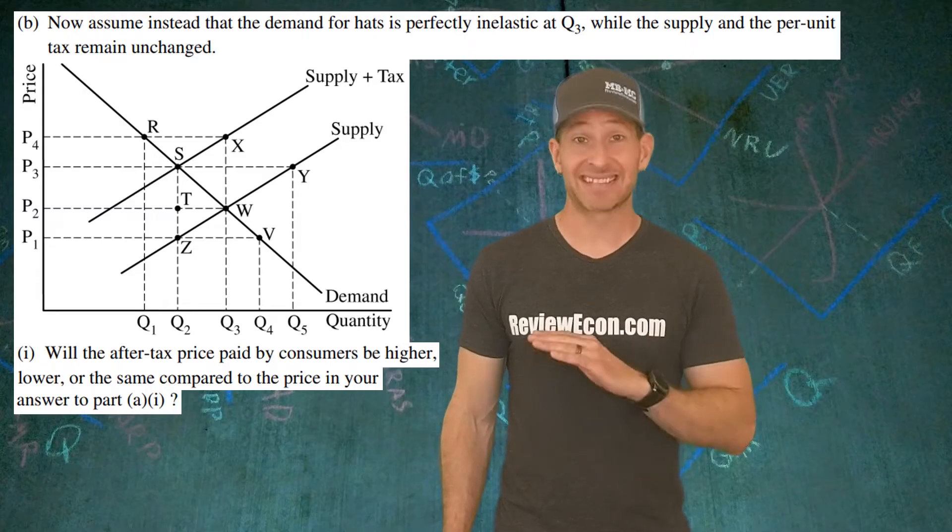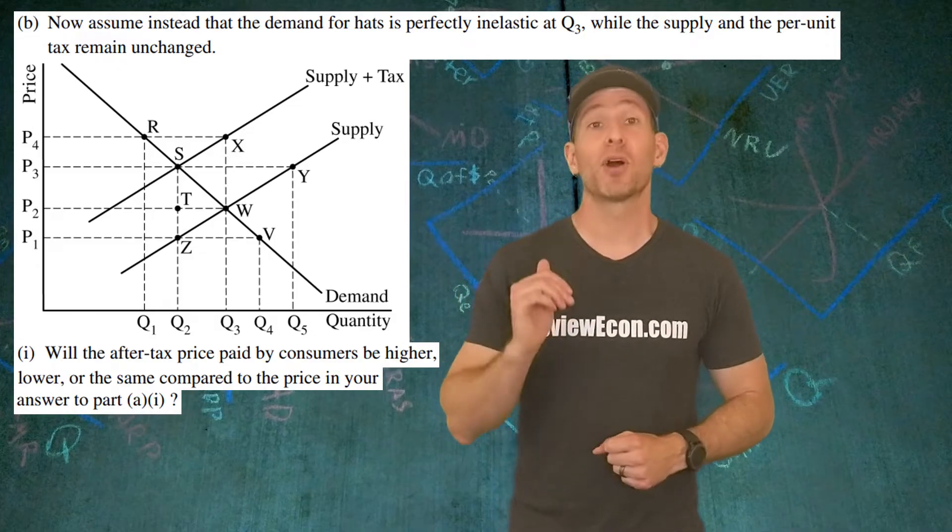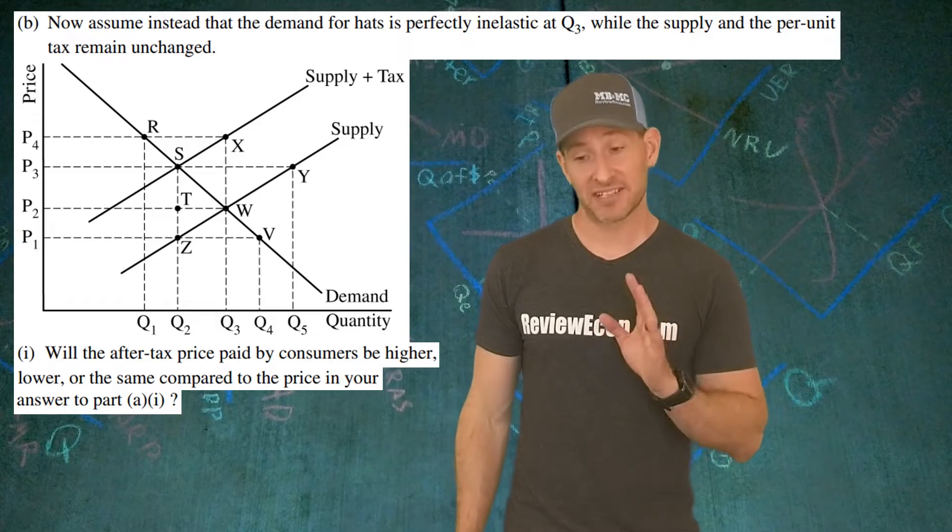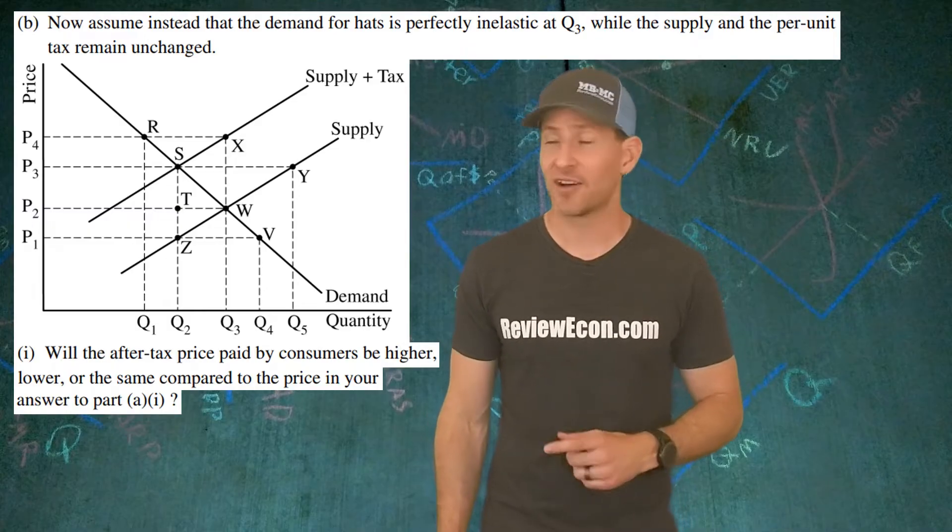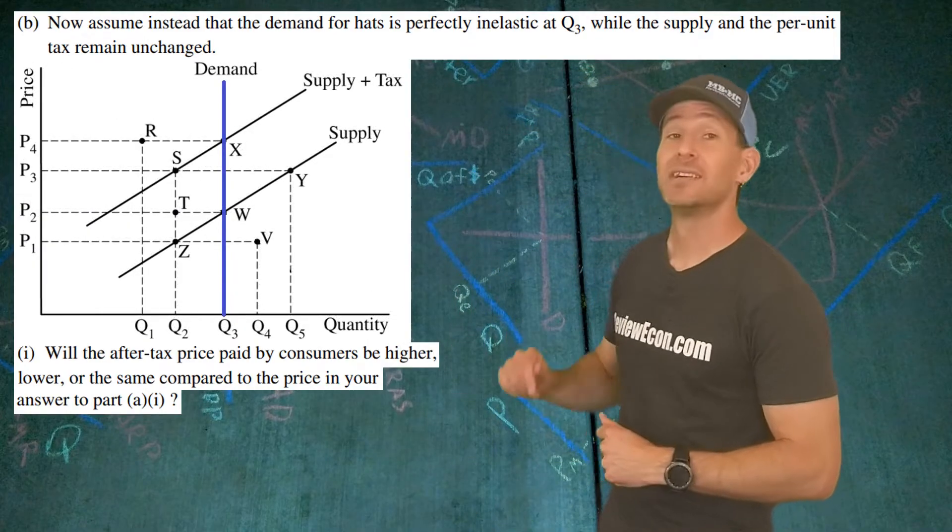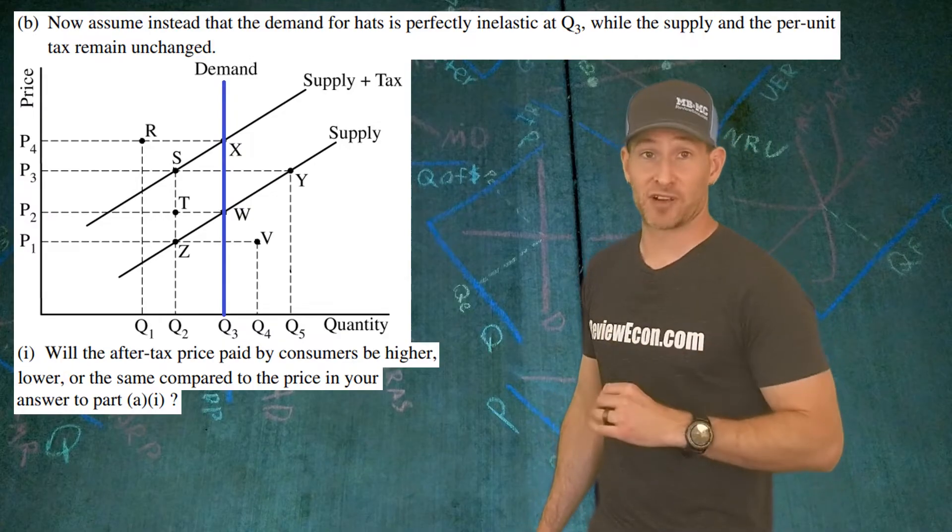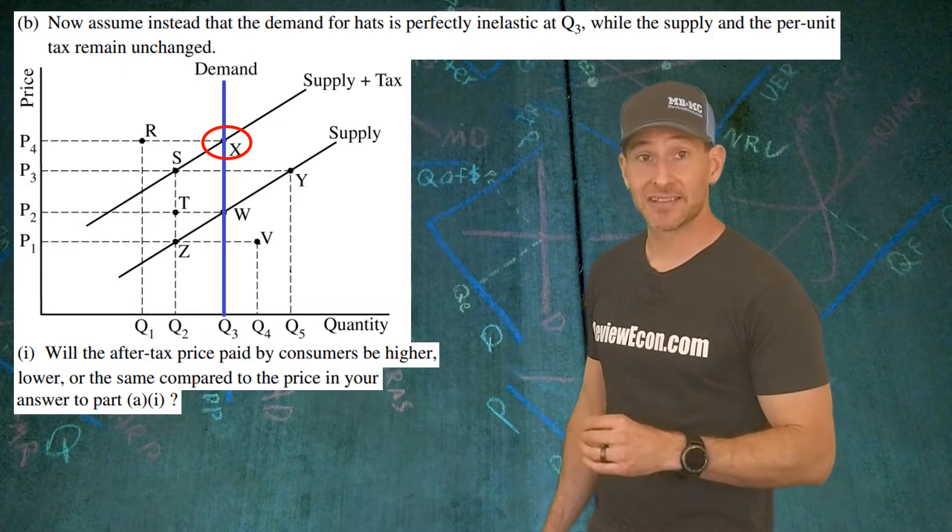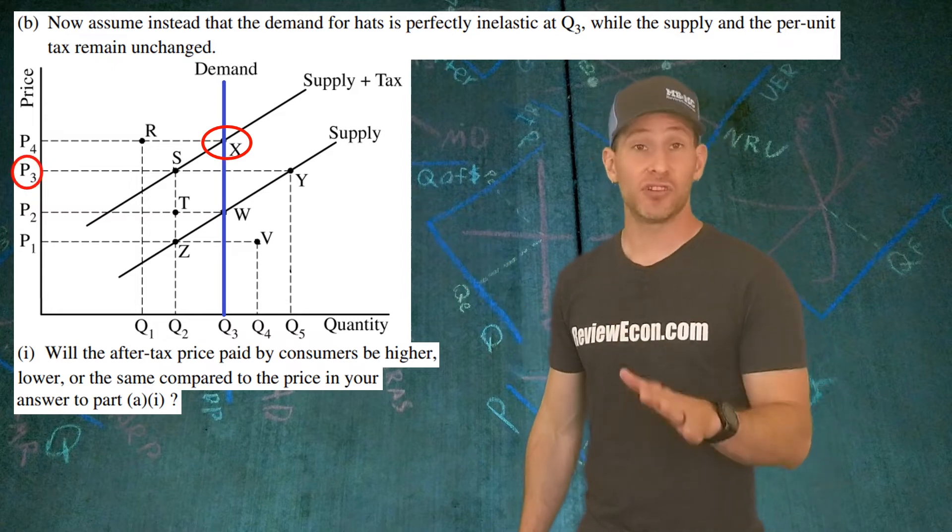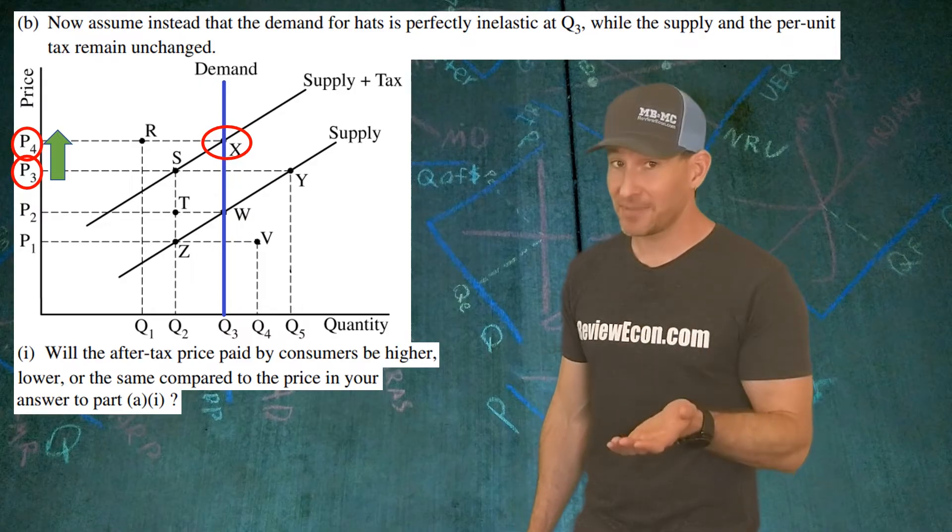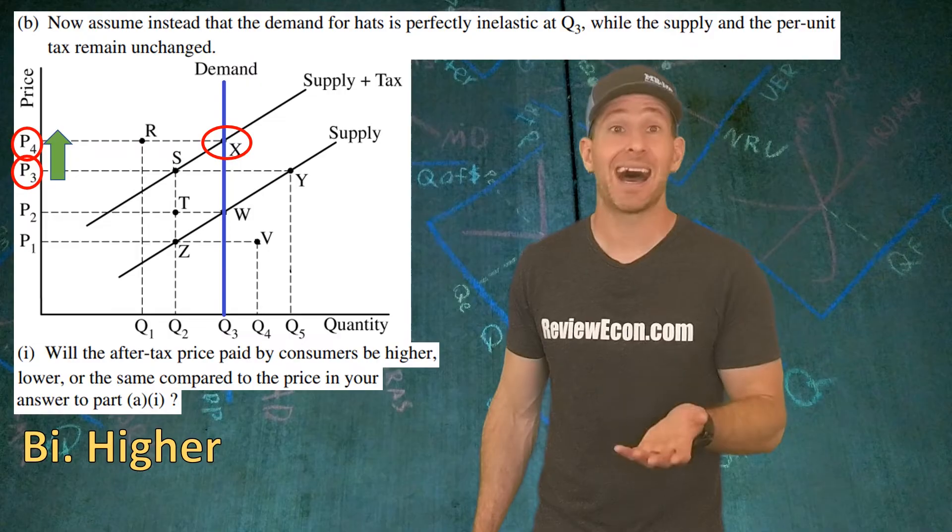For part B, we have to assume that instead of the downward sloping demand curve we just had, we now have a vertical, perfectly inelastic demand curve. And we have to decide what that will do to the price that consumers pay. The way I would figure this out is simply draw in that vertical demand curve and see where the new intersection of the equilibrium is. And that is the price that consumers will pay. The old price was at P3, and the new price is at P4, so that means consumers will be paying a higher price. All you have to do is just say higher, and you'll get your point.